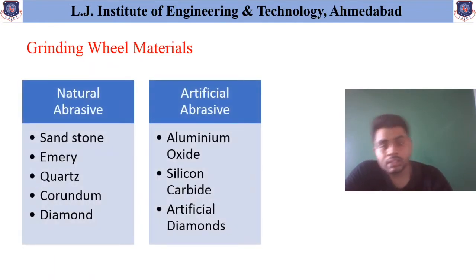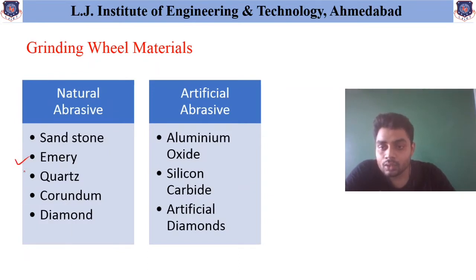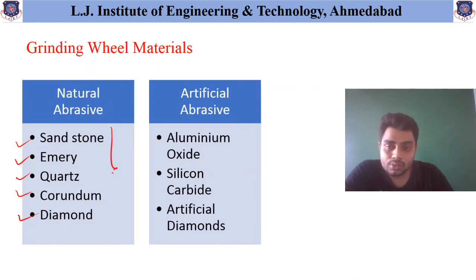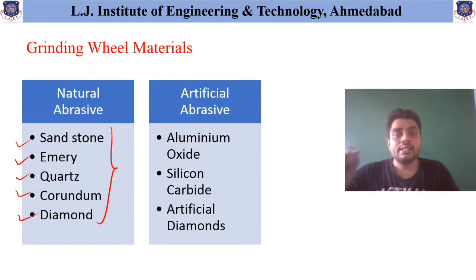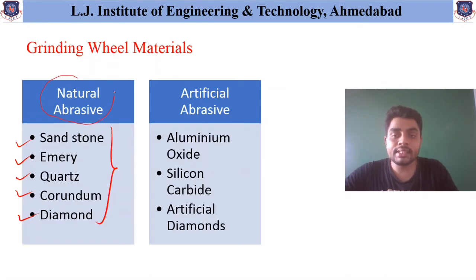The natural abrasives that are available are sandstone, emery, quartz, corundum, and diamond. You need to remember these names because by keeping these names in clarity you will come to know that these are the natural abrasives that are directly available from the mines.